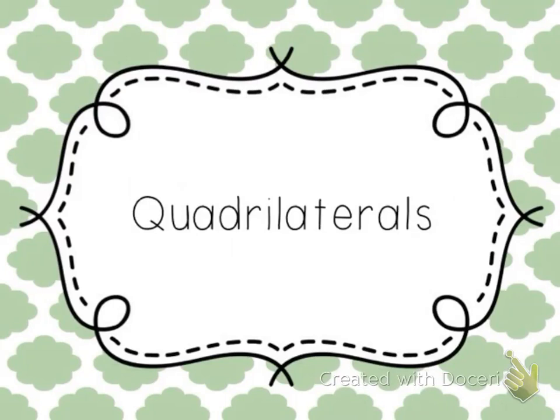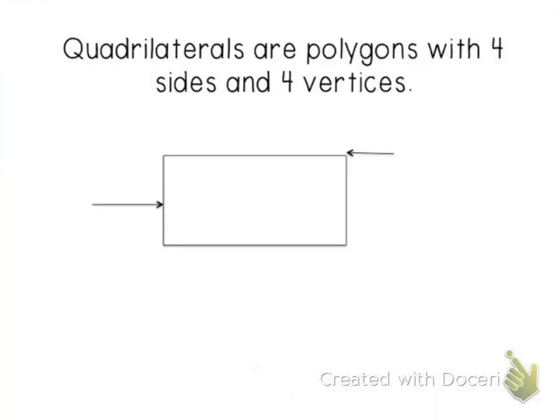We're going to start by looking at some quadrilaterals. Quadrilaterals are polygons with four sides and four vertices. A vertex is the angle, or where two of the sides meet.